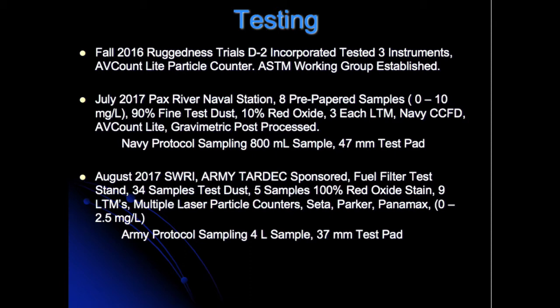In July of 2017, the Pax River Naval Station ran eight prepared samples from 0 to 10 milligrams per liter, with 90% fine test dust and 10% red oxide, using three light transmission method devices, the Navy CCFD device, the Avcount Light, and gravimetric post-processed. Navy protocol sampling used an 800-milliliter sample with a 47-millimeter test bed.